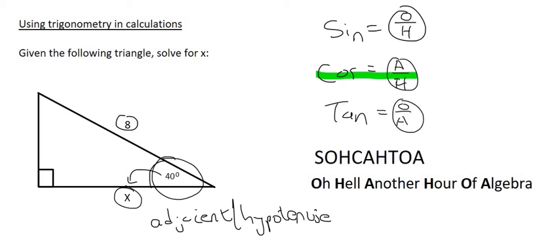So the way to do this mathematically is you would then say that the cos of the angle, so cos of 40, equals to the adjacent, which is x, over the hypotenuse, which is 8.